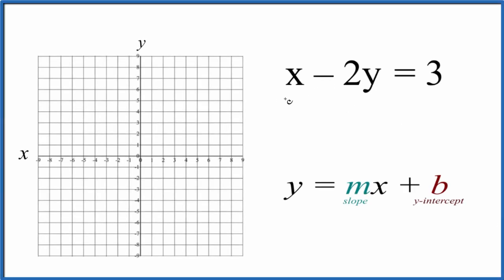Let's graph the linear equation x minus 2y equals 3, and we'll use slope-intercept form to do that. So to start out, we want to get y by itself.